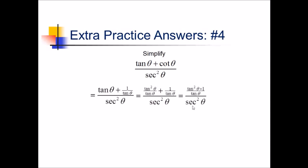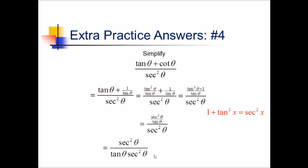At this point, I know the identity 1 plus tan squared equals secant squared, so I'm going to replace tan squared theta plus 1 with secant squared. Now things are starting to come together. If I divide this whole fraction by secant squared — that's really like multiplying by 1 over secant squared — I can put the secant squared into the denominator of this fraction up here. The secant squareds cancel nicely, leaving us with 1 over tan of theta, which is equivalent to cotan of theta.